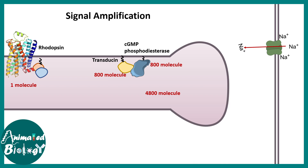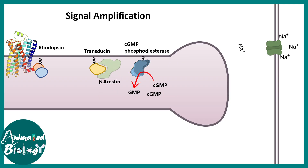Signal amplification is also remarkable in vision: one molecule of rhodopsin is estimated to activate 800 molecules of transducin, and eventually 4,800 molecules of cyclic GMP can be broken down. At each step there is signal amplification, which allows us to detect minute details and low light intensities.